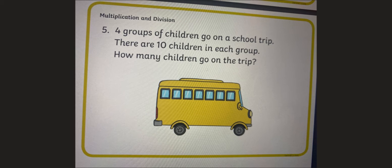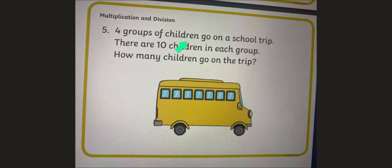Have you done that? Well done. Here's the question. Four groups of children go on a school trip. There are 10 children in each group. How many children go on the trip? So there are four groups of children and there are 10 children in each group. So you will need to draw your four groups and put your 10 children in each group. Draw it in your maths book now, find the answer, and write it down. Pause the video now.